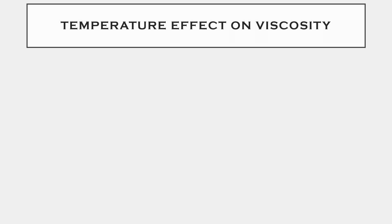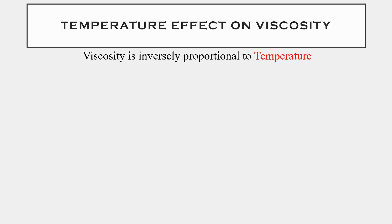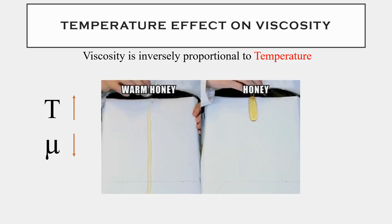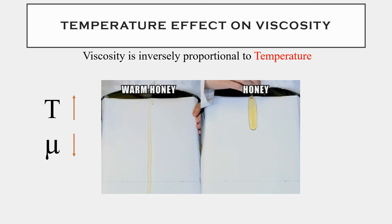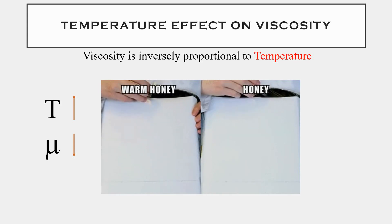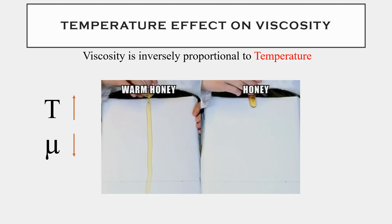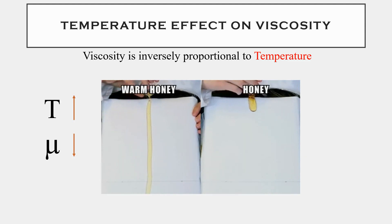Next is the temperature effect on viscosity. Viscosity is inversely proportional to temperature. If the temperature increases, the viscosity is lower. Looking at warm honey on the left and normal honey on the right: for the warm honey the flow rate is very high. At lower temperature the fluid resistance is less and flow is faster.